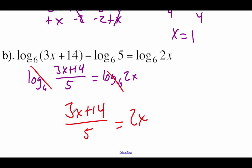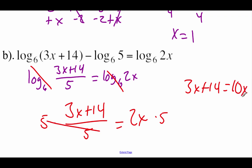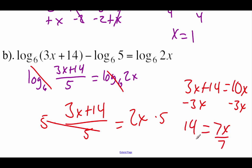Now in order to get rid of this fraction on the left-hand side, we'll multiply both sides by 5. So we get 3x plus 14 equals 10x. Subtract this 3x over to the right-hand side, we get 14 equals 7x. Divide both sides by the 7, and we end up with an x value of 2.